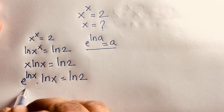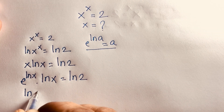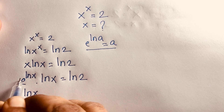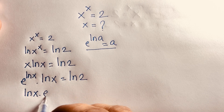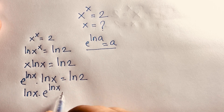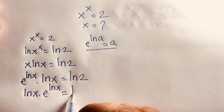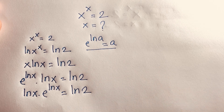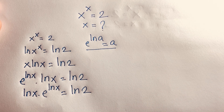The equation becomes: ln(x) times e to the power ln(x) equals ln(2). Now we want to solve for x in this equation.